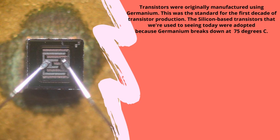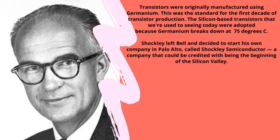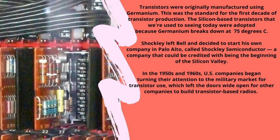Bardeen, Brattain, and Shockley shared the world's top science award — the 1956 Nobel Prize in Physics — for their discovery. Transistors were originally manufactured using germanium, the standard for the first decade of transistor production. Silicon-based transistors were later adopted because germanium breaks down at 75 degrees Celsius. Shockley left Bell Labs and started his own company in Palo Alto called Shockley Semiconductor, a company credited with being the beginning of Silicon Valley. In the 1950s and 1960s, U.S. companies focused on the military market, leaving the door open for others to build transistor-based radios.